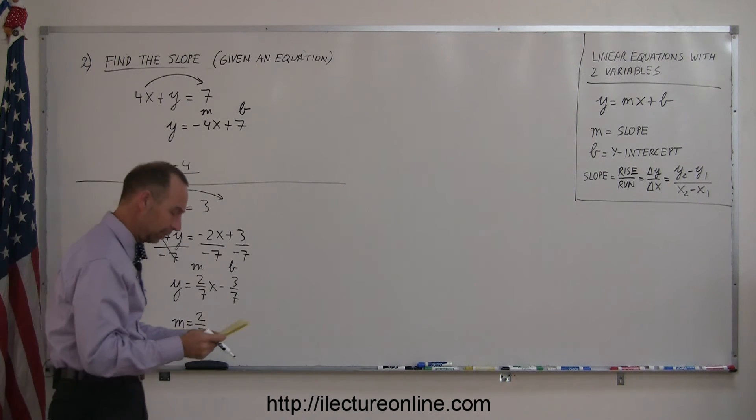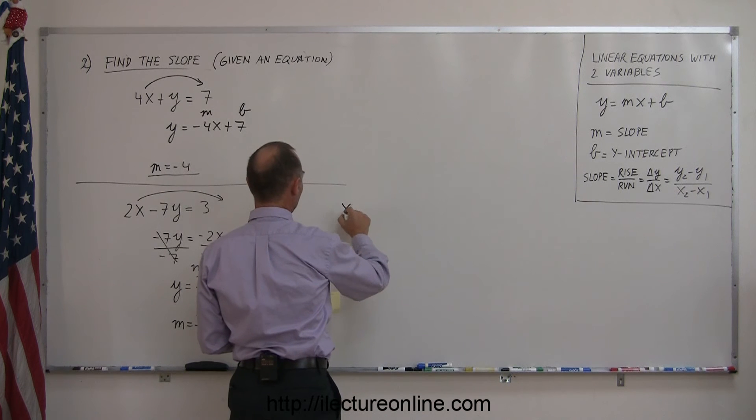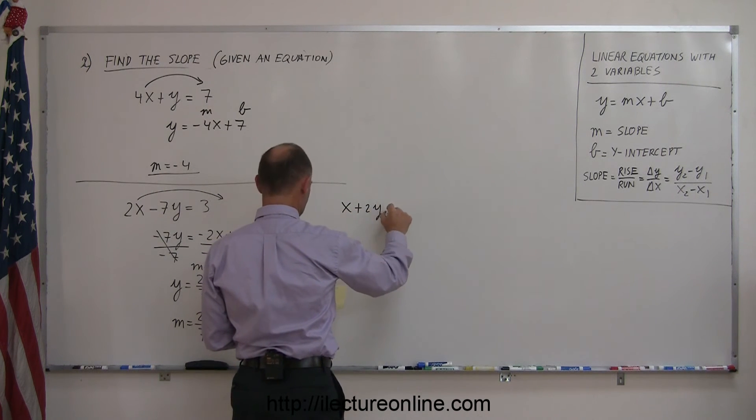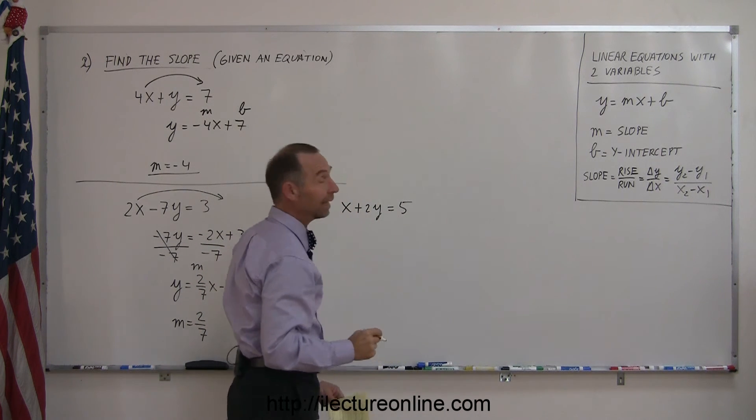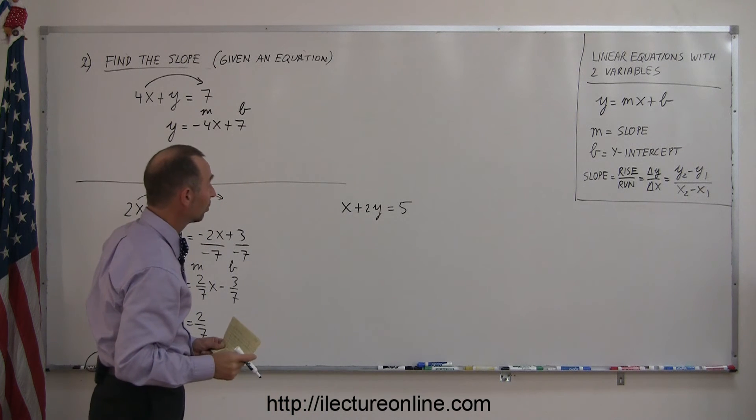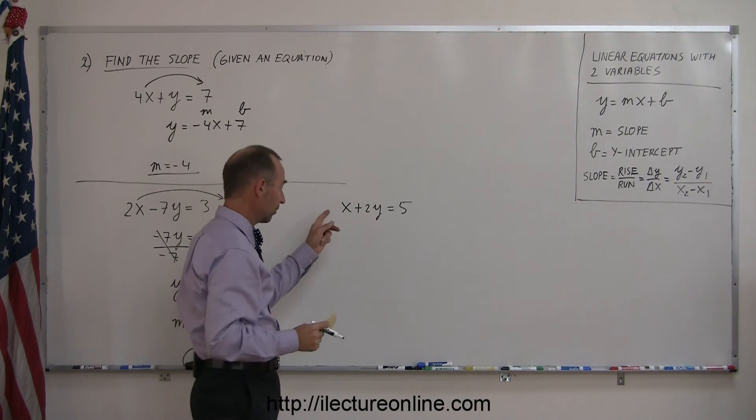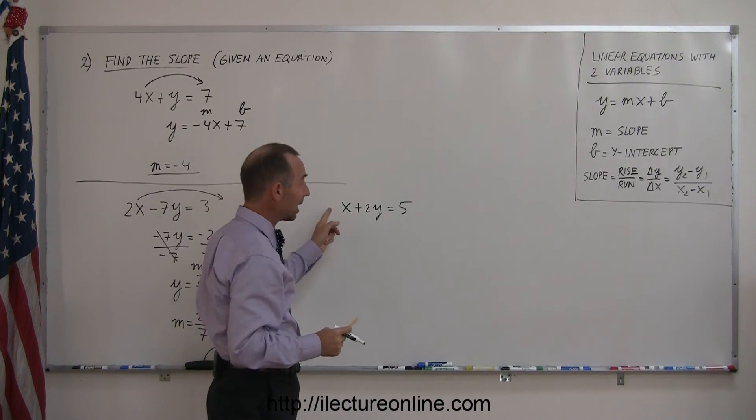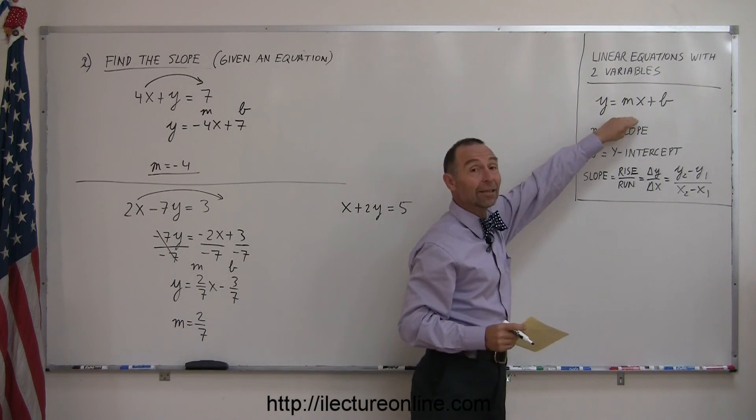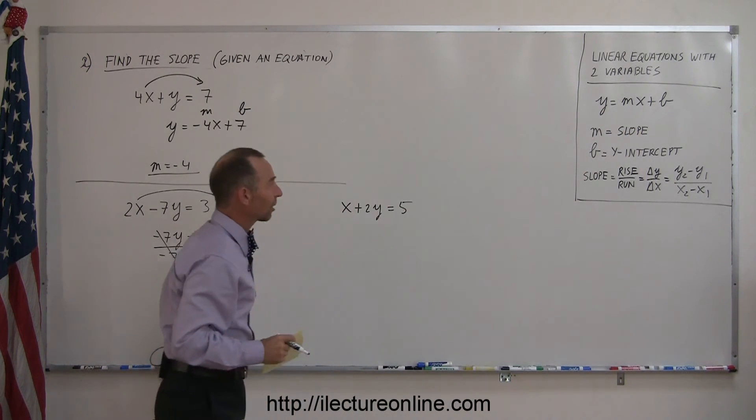Okay, one more example. What if we have x plus 2y equals 5? Alright, again, you have to find the slope. The slope is the numerical number in front of x, but you can't pick the number yet because it's not yet in this form that you want: y equals mx plus b.